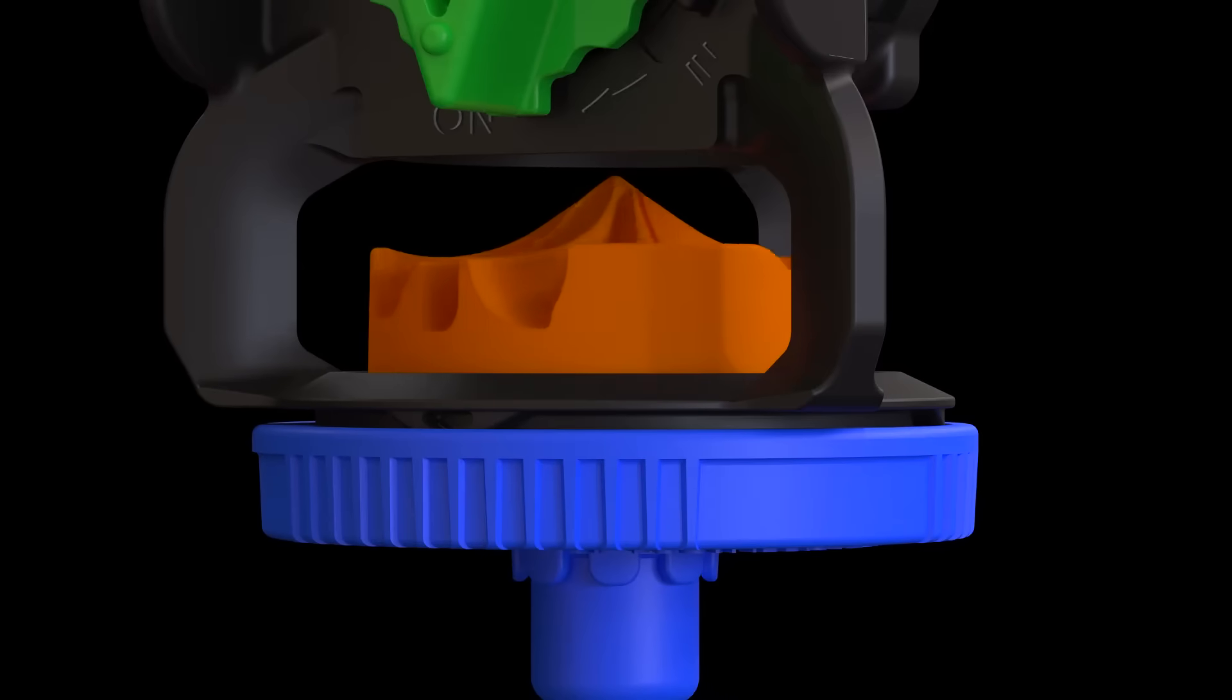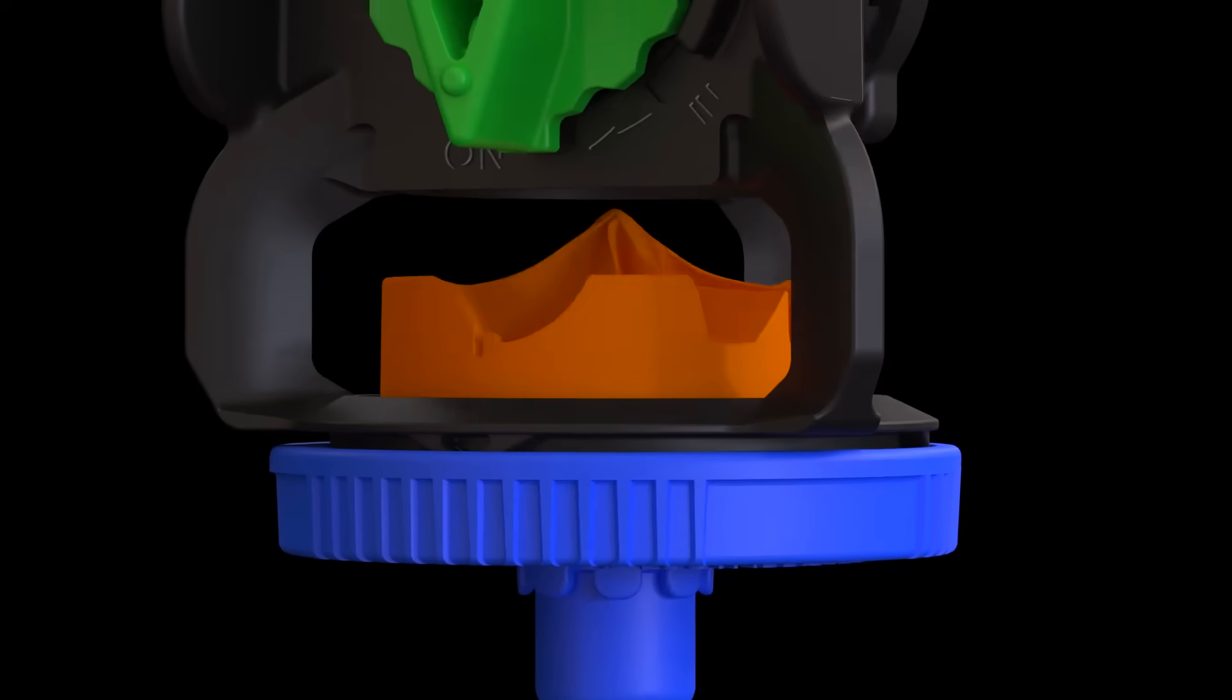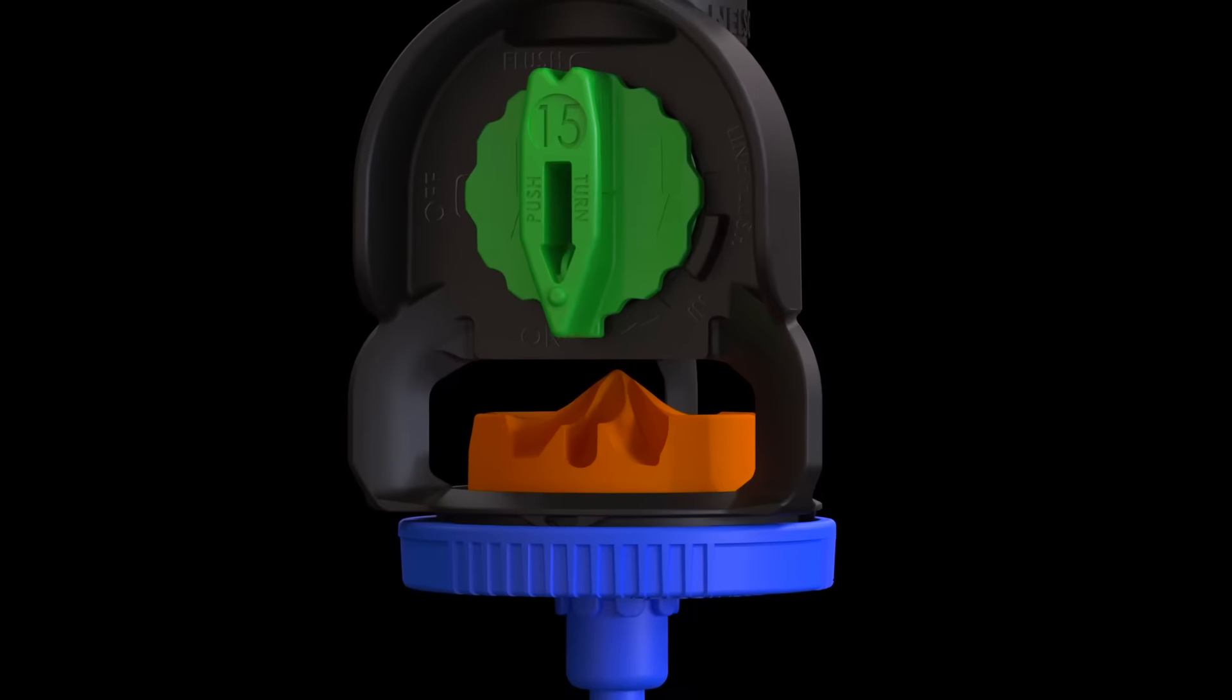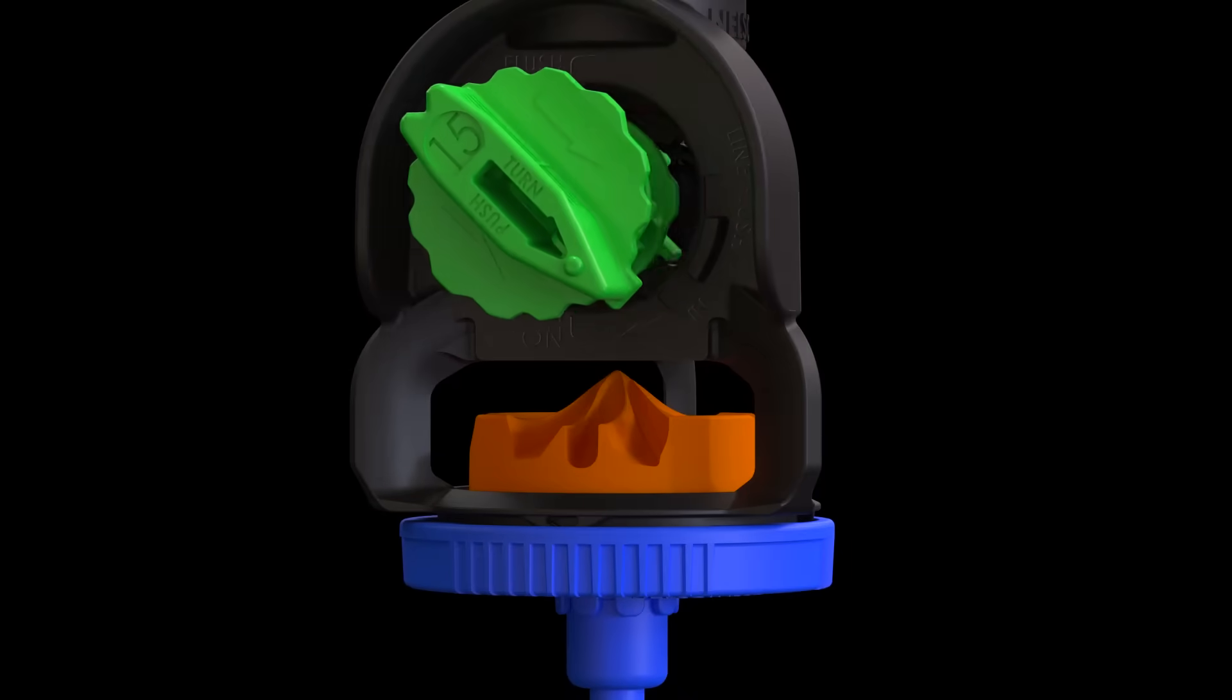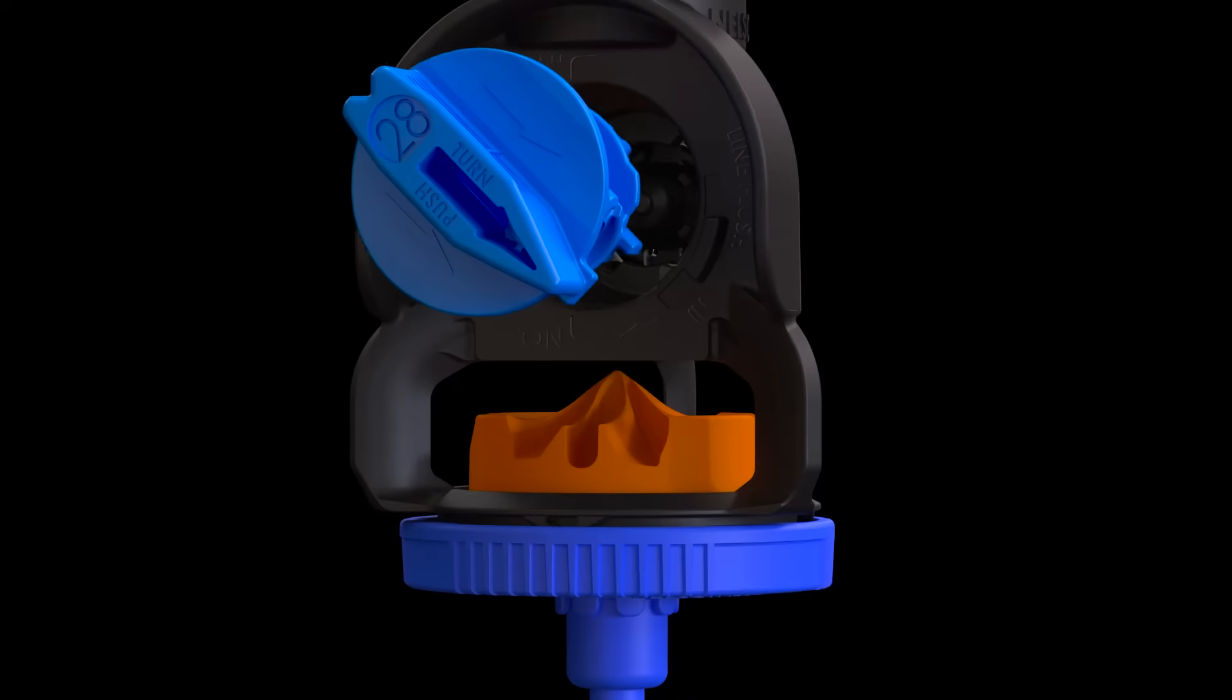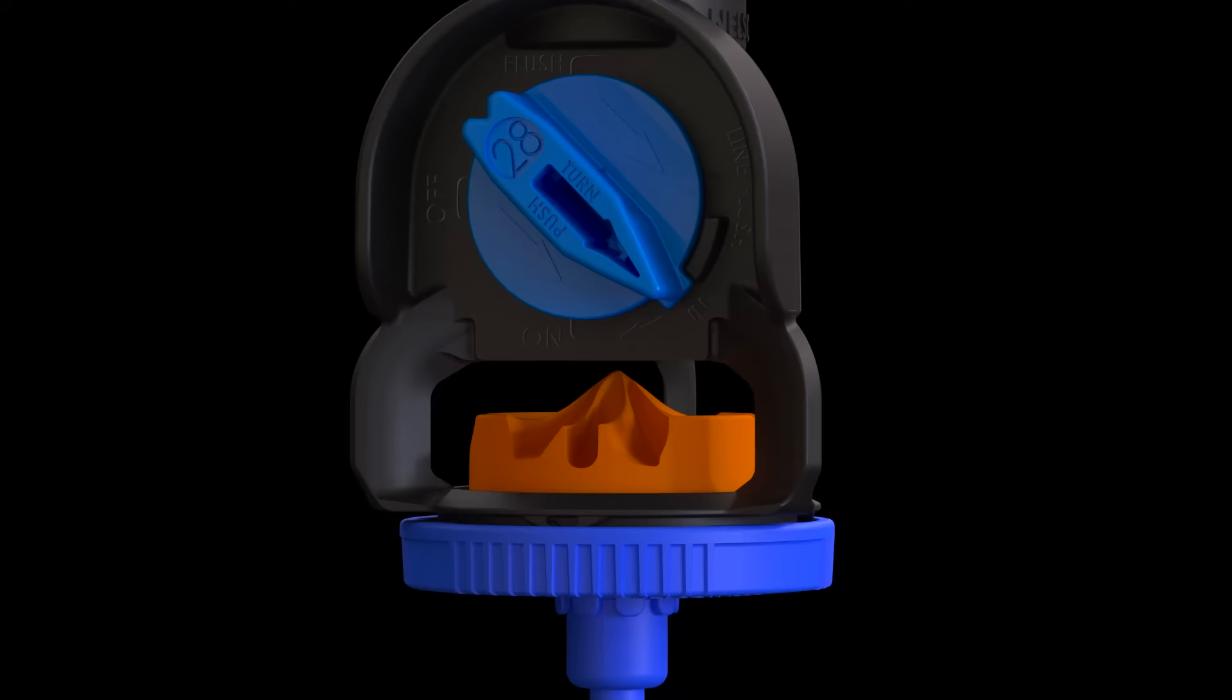Nelson Irrigation is proud to introduce the 3030 series sprinklers and the multifunction 3NV nozzle. An innovative multitasking nozzle - just press, spin, and click. High visibility flow arrows identify functions.